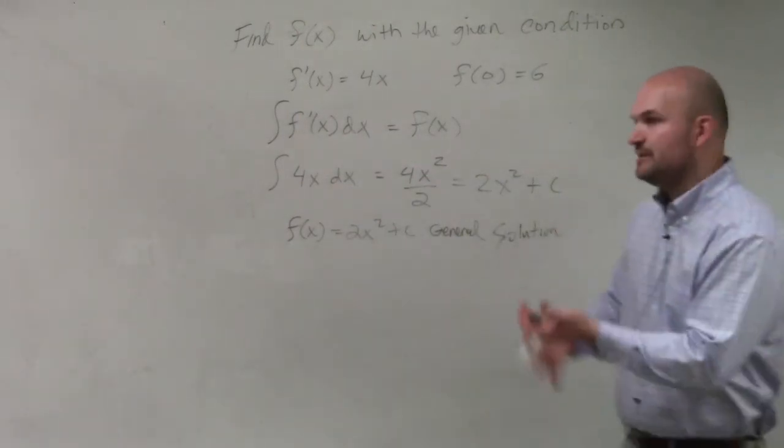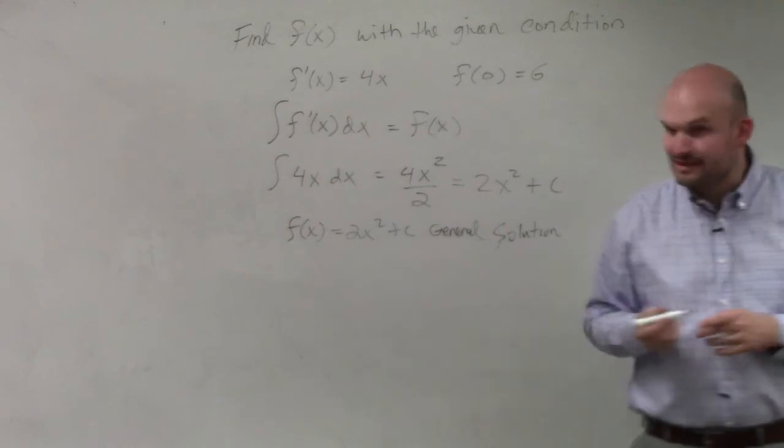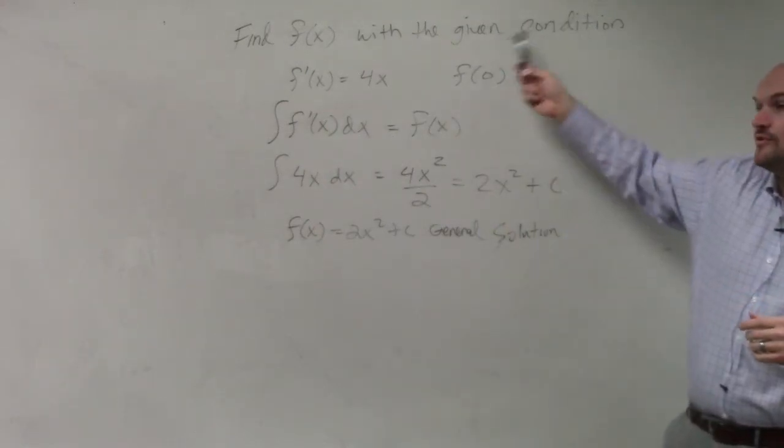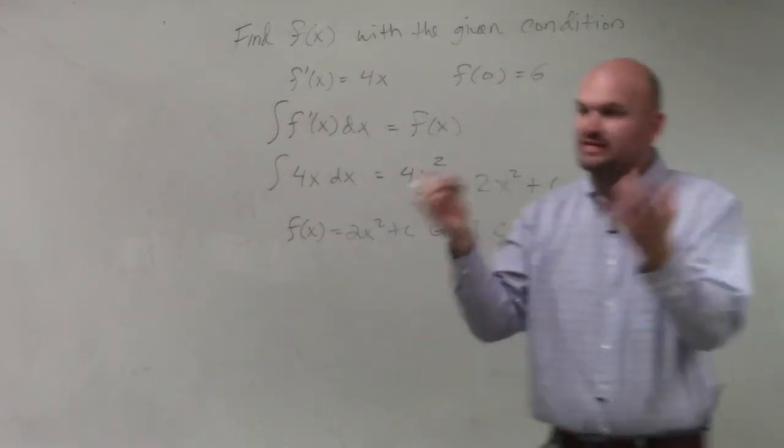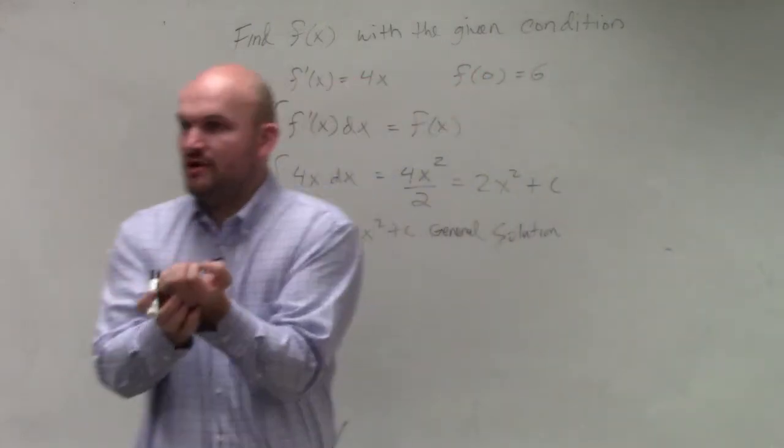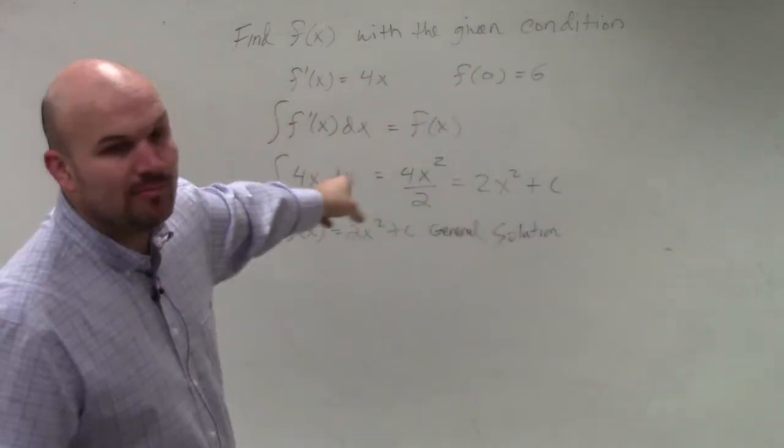C could be any constant number. It could be 5, it could be negative 2, it could be pi. C could be anything. But now what we're looking for is a given condition. We're looking for a particular solution, one solution. We're looking for that function that contains that one point.